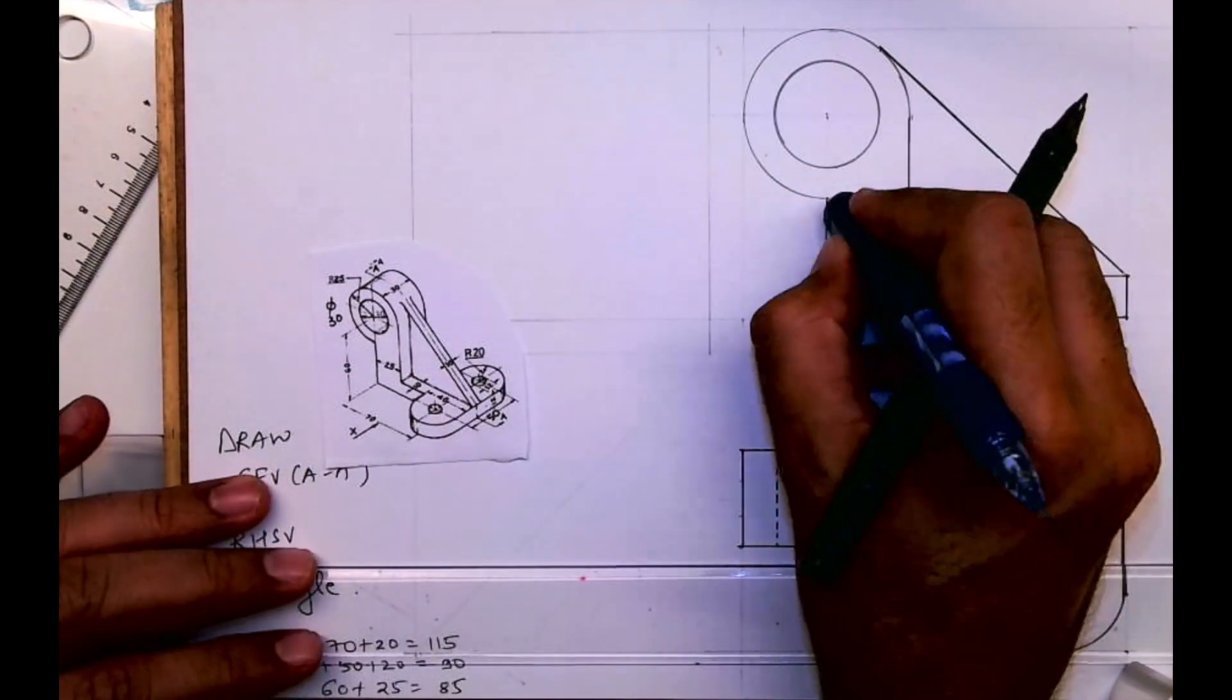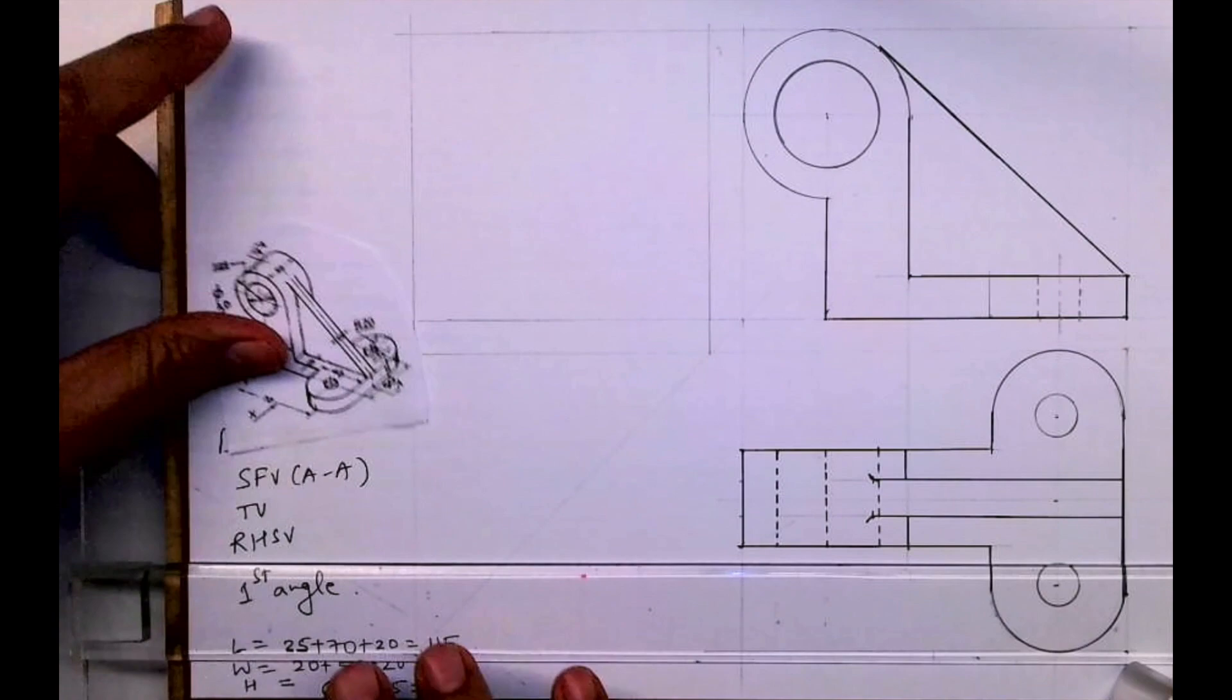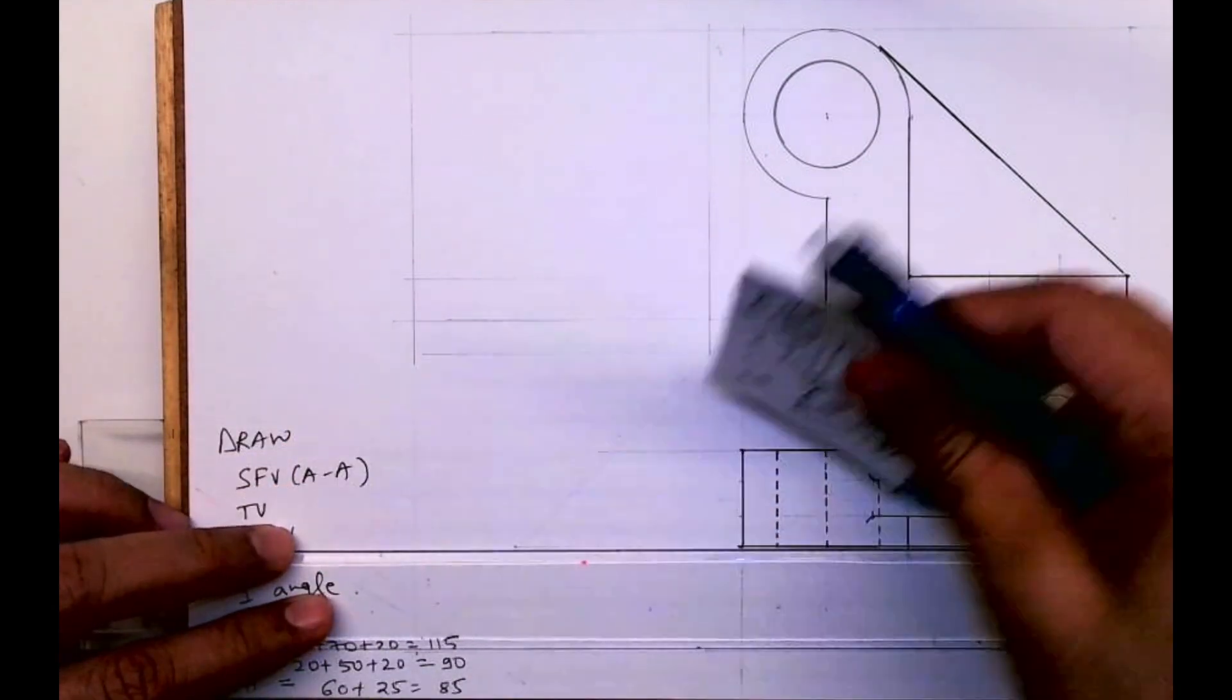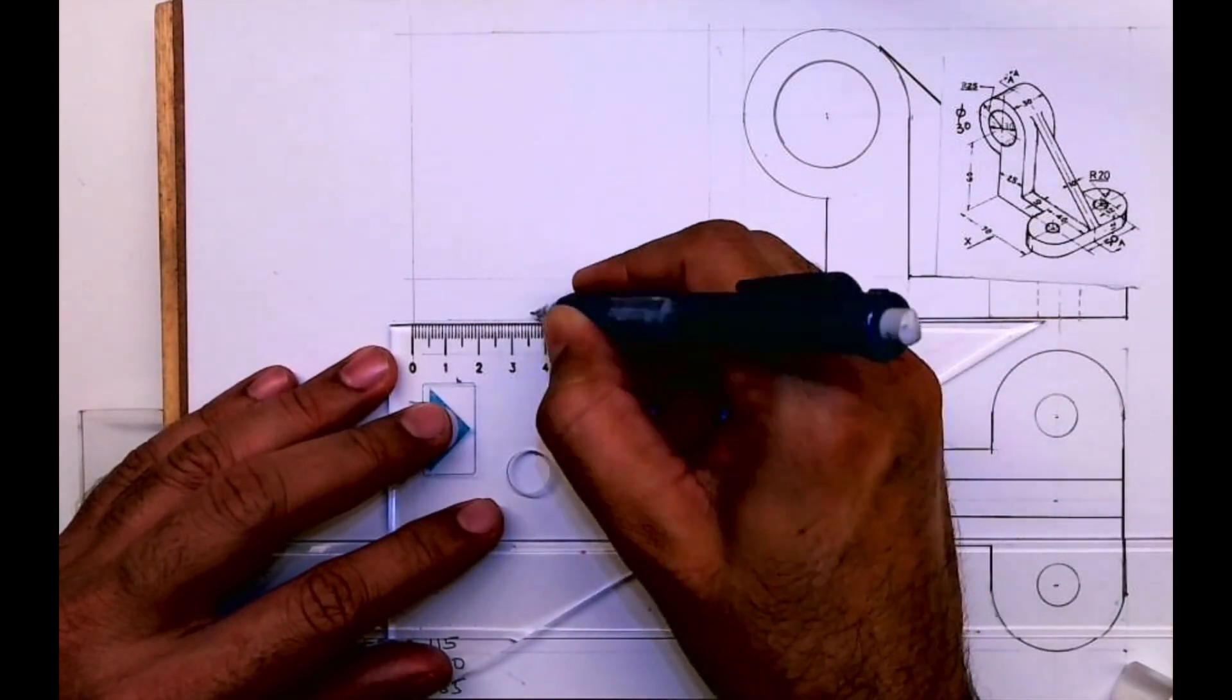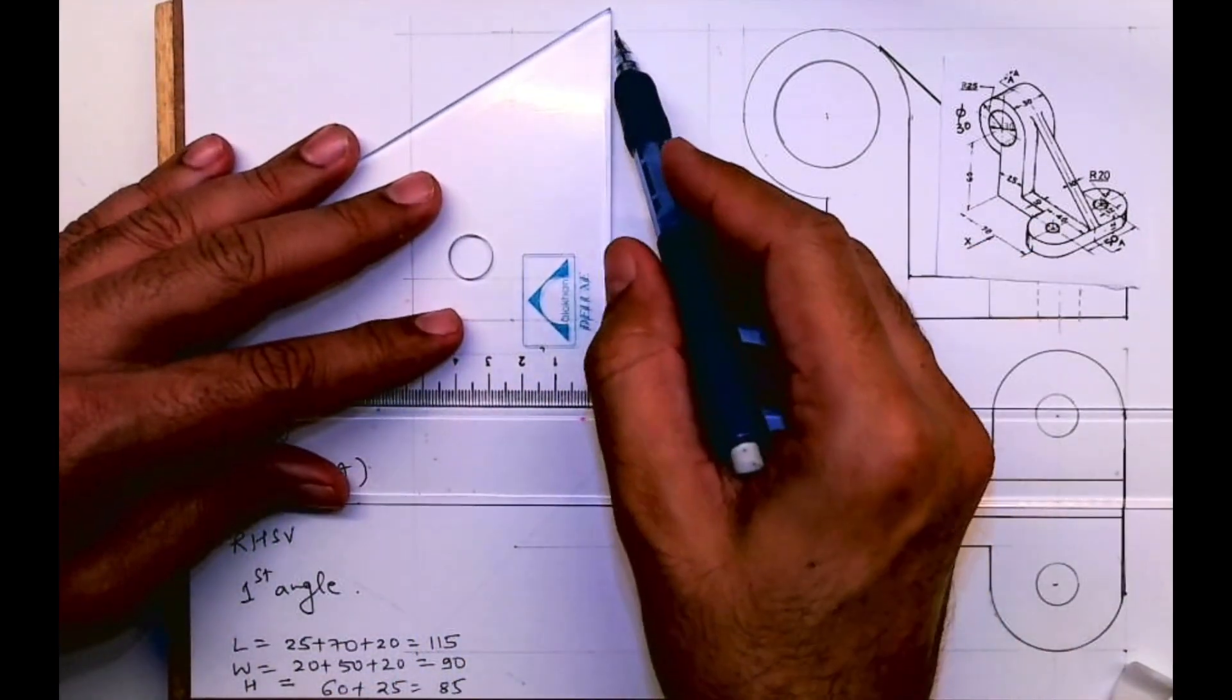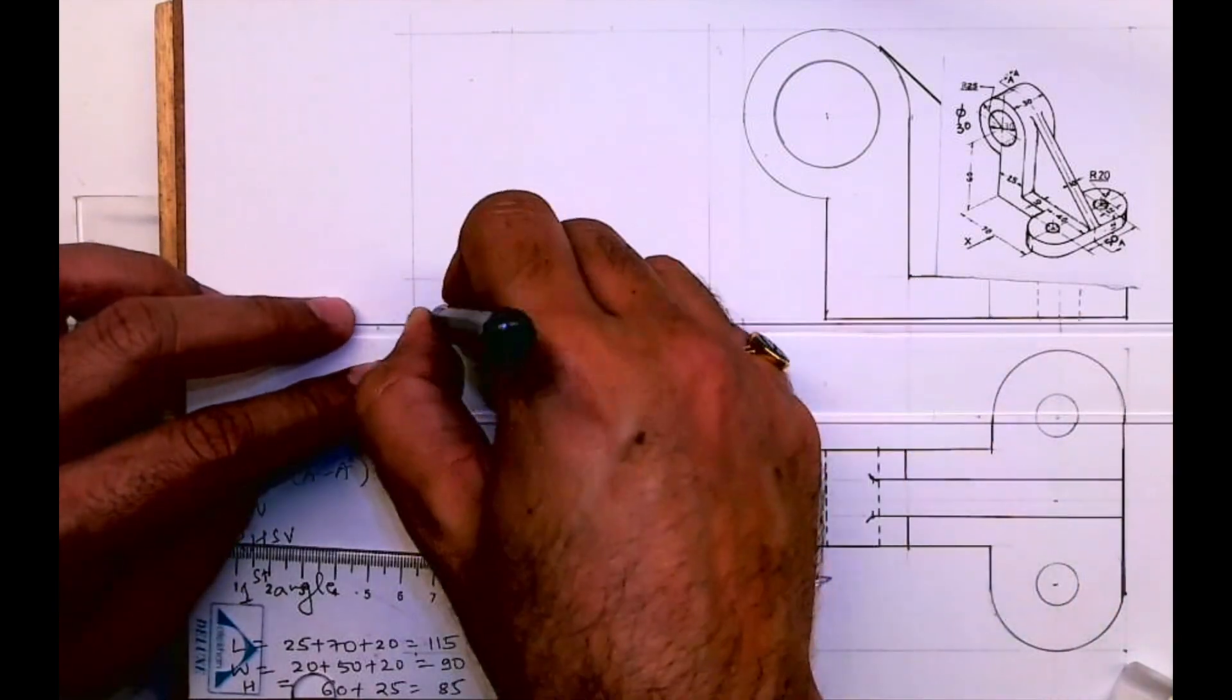Now we'll see side view. You'll project this, it will be rectangle, the bottom part. This you'll project. You take midpoint and then take 15, 15 on both the sides. You can project also from the top view.